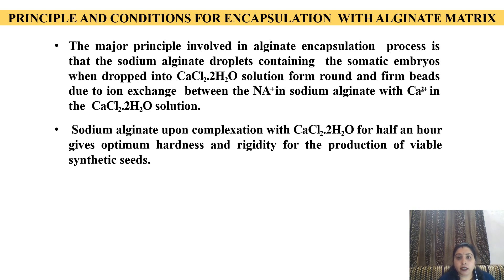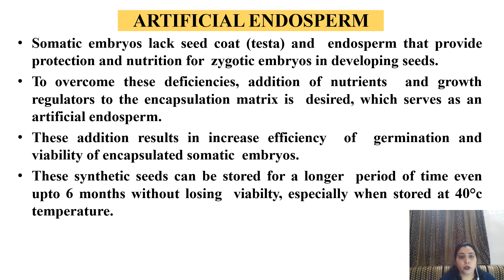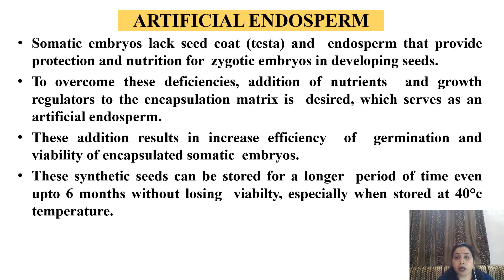Sodium alginate droplets containing somatic embryos, when dropped into calcium chloride solution, form round, firm beads due to the process of ionic attraction, producing viable synthetic seeds. Artificial endosperm: As we know, artificial seeds always lack a seed coat and endosperm that provide vast nutrients to the embryo.